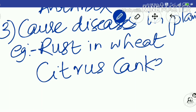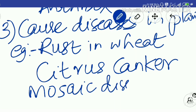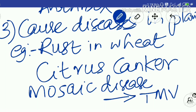Another plant disease is tobacco mosaic disease — you can see mosaic-like patches on the plant. In higher classes you will study this is caused by a virus called Tobacco Mosaic Virus, or TMV. So microorganisms cause diseases in humans, animals, and plants, with examples like Foot and Mouth Disease, rust in wheat, citrus canker, and mosaic disease in tobacco.